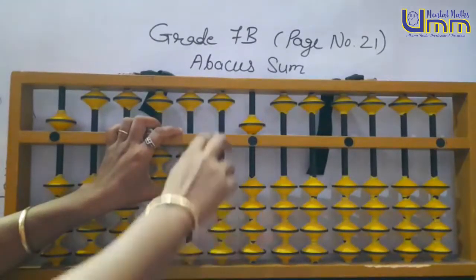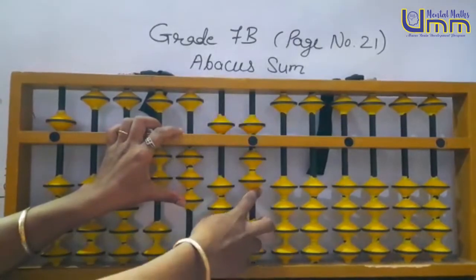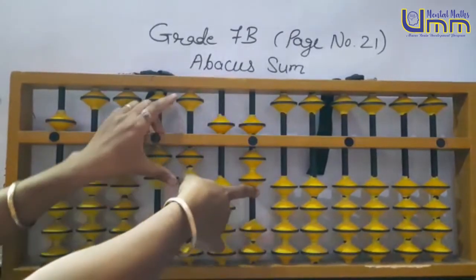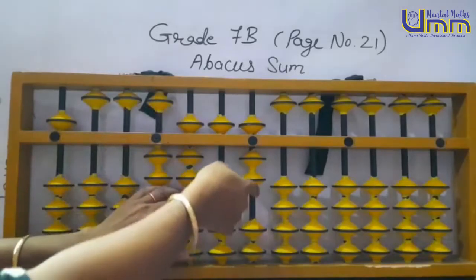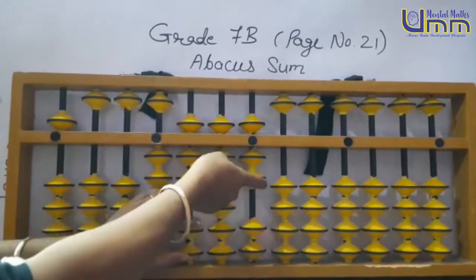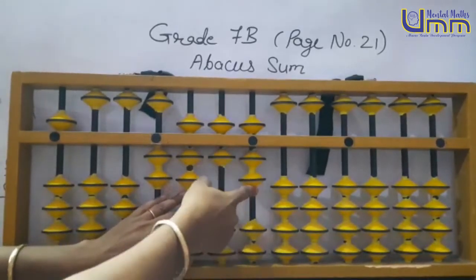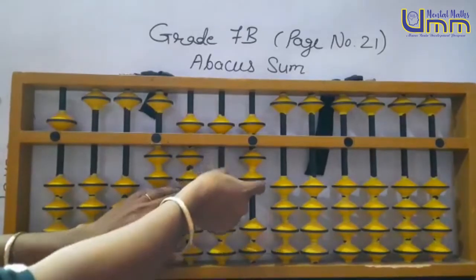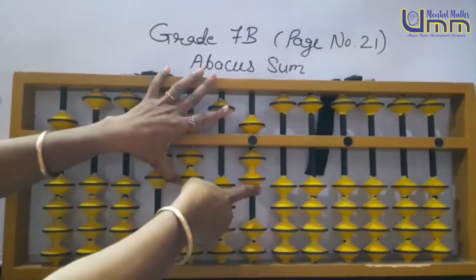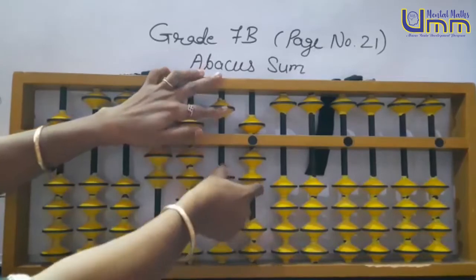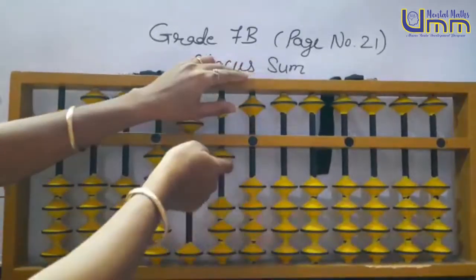52: 50 directly, 2 directly. 410: 4 plus 5 minus 1, 10. Then 43: 40 minus 6 plus 10.